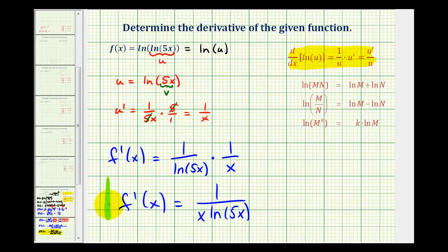So our derivative function is going to be equal to one divided by x times natural log five x. So as you can see, this wasn't so bad after all. As long as we take our time, identify the inner function, determine the derivative of the inner function, and then apply the derivative formula for natural log u, which includes the chain rule.